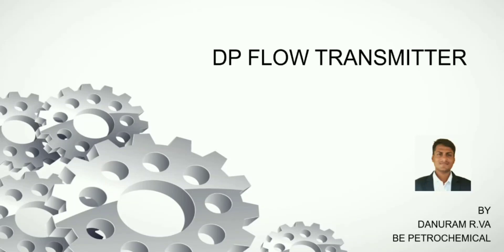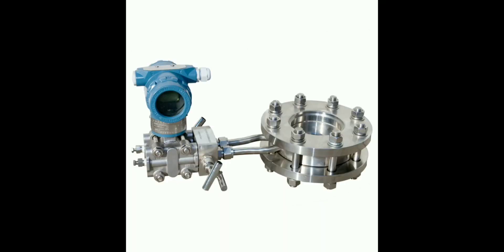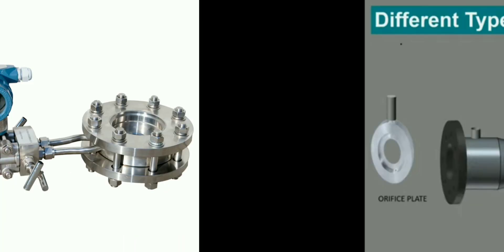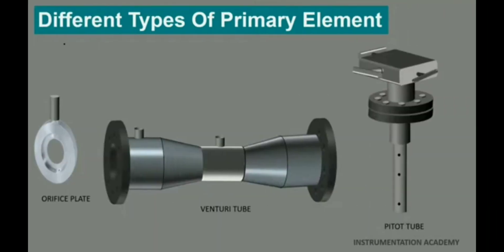Welcome back to my YouTube channel. In this video we are going to see about a DP flow transmitter. A differential pressure flow transmitter is a device used to measure the flow rate of fluids in a pipeline by sensing the pressure difference across an obstruction inserted into the flow path, such as an orifice plate, venturi tube, or flow nozzle.